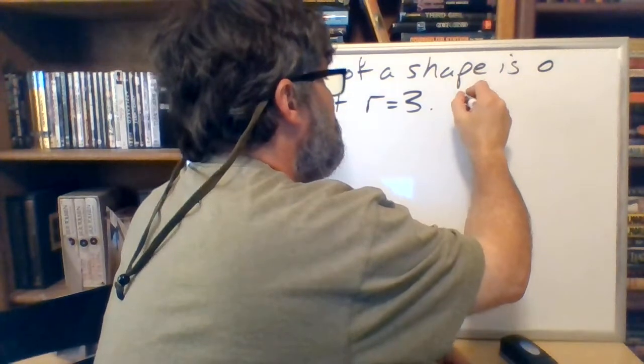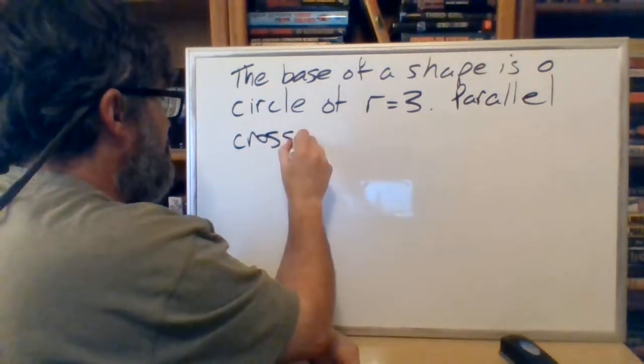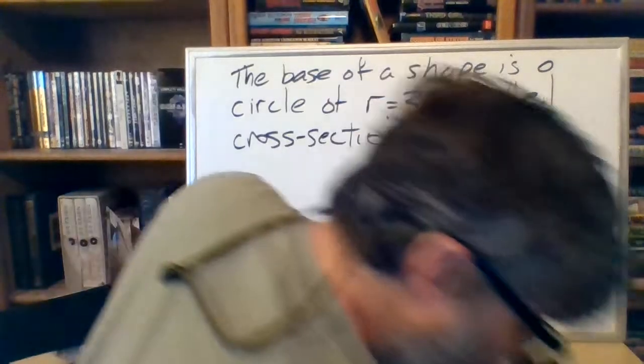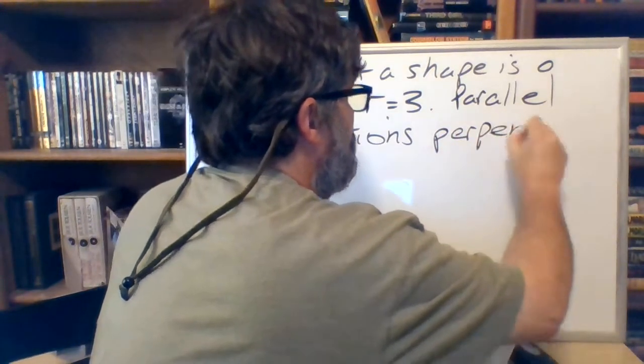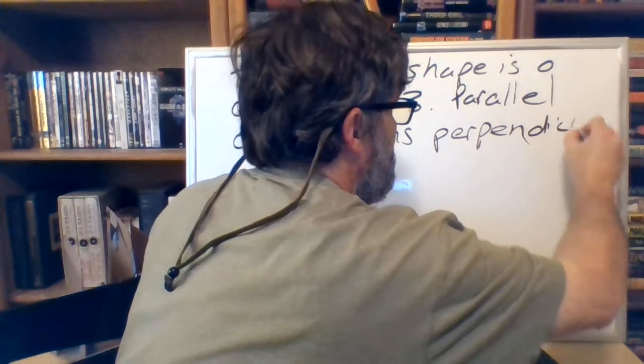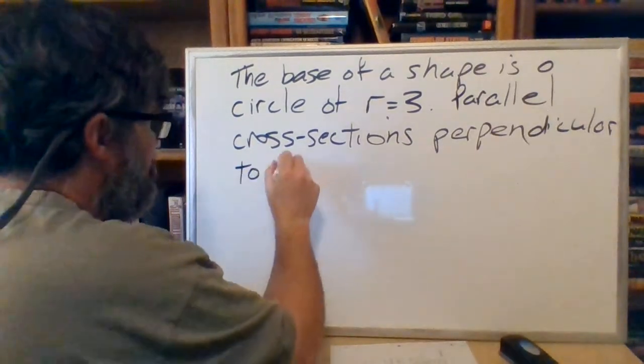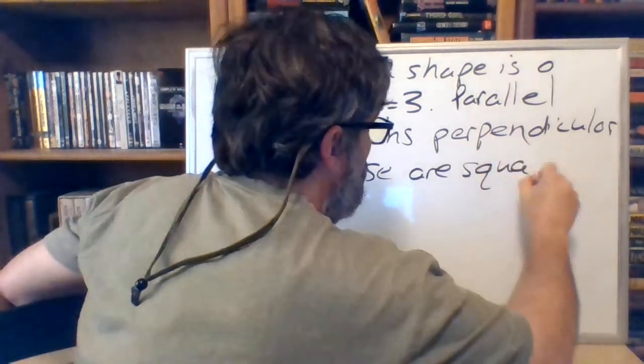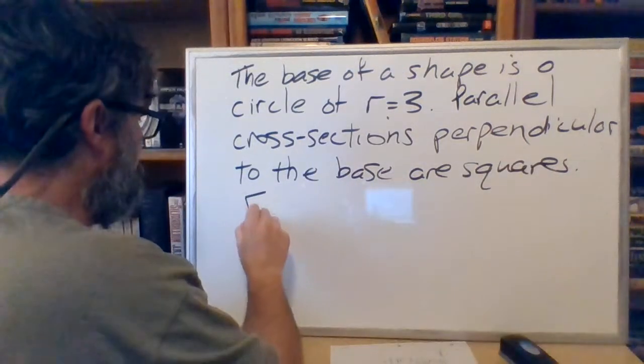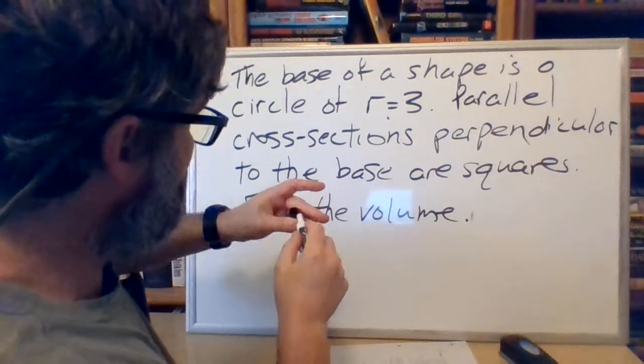Okay, the next thing I want is I want parallel cross-sections. Parallel cross-sections. And let me grab my notes that I can write this down correctly and coherently. Perpendicular... Wow, is that a spell perpendicular? It's going to be now. Perpendicular... Whoops! To the base are squares. Find the volume, period. Find the volume of whatever that shape is.